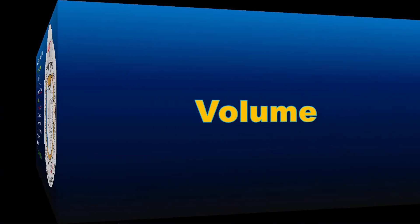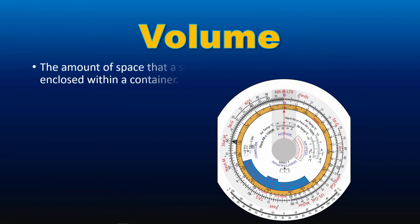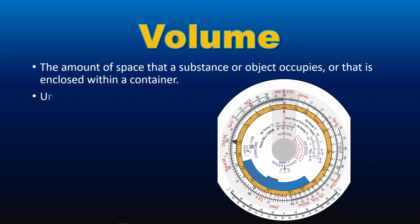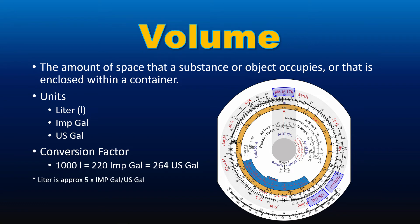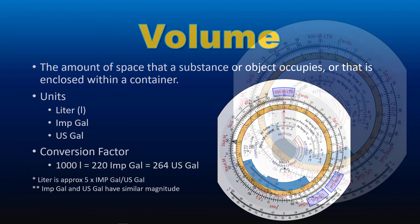Now let's take a look at volume conversion. Volume is defined as the amount of space that a substance or object occupies, or that is enclosed within a container. Volume units that can be converted using CRP5 are liters, imperial gallons, and US gallons. The key relationship: 1,000 liters equals 220 imperial gallons and 264 US gallons. For approximation, liters are approximately 5 times imperial or US gallons, and imperial gallons and US gallons have roughly similar magnitude.